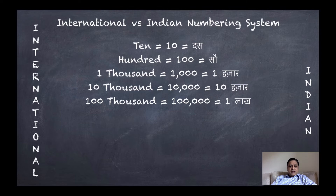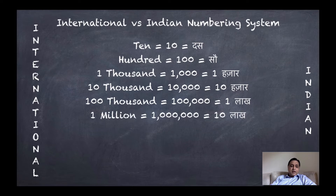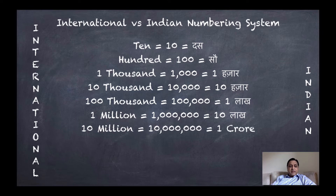One hundred thousand — written as 1,00,000 in Indian notation — is one lakh, a number we use a lot. So 1,00,000 is a common reference point, and it has 5 zeros. Moving further, 10,000,000 in the international system is equal to 1 crore in Indian rupees, and 1 crore has 7 zeros.